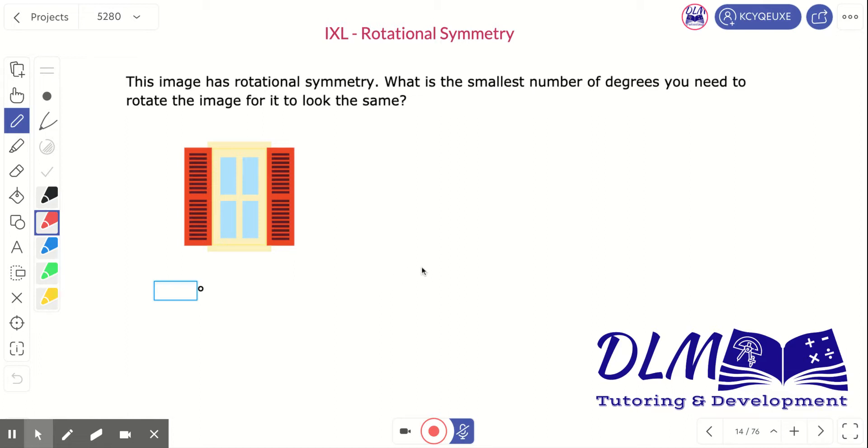For our last image, we're looking at this window. Now, you might be thinking to yourself, I'm not sure if this is going to have rotational symmetry. But remember, the definition is that I can turn it one half turn. Or in other words, I can turn it one, two. Those are the number of sections that I have here.